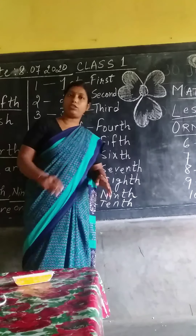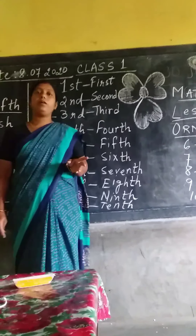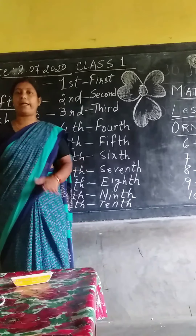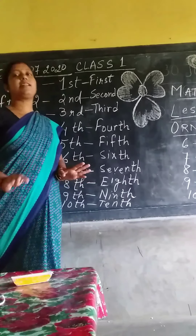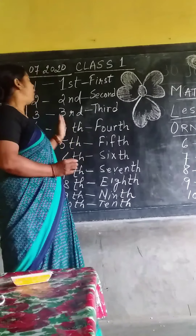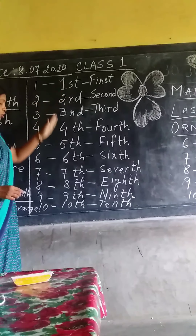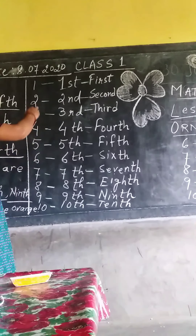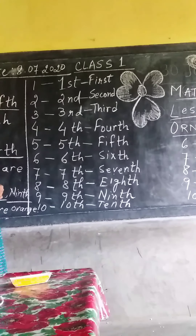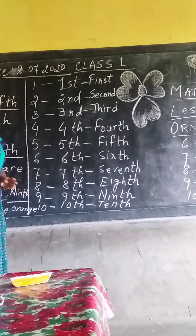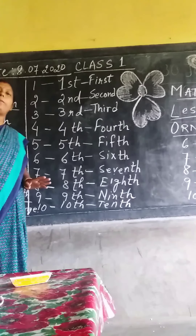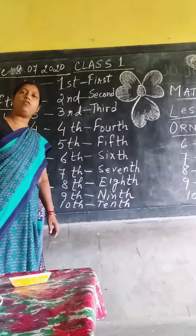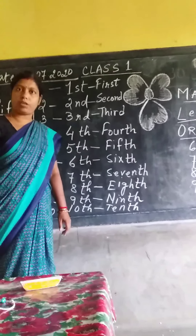I have already taught you from 1 to 10, that is, first to tenth. Now, in this class, you should know from first to tenth. I have written them from 1 to 10. No need to write down in your copies now. Once you get your copies back, please write them down in your maths copies.